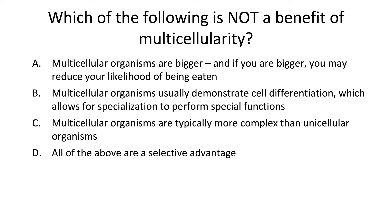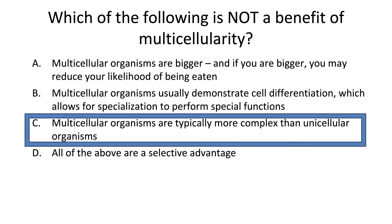Quick question: which of the following is not a benefit of multicellularity? If you said C — that multicellular organisms are typically more complex than unicellular organisms — that is a true statement, but it is not necessarily a benefit. Complexity in itself is not a benefit. There can be benefits associated with complexity, like greater specialization or being larger to access larger prey, but all things being equal, being more complex versus unicellular is not inherently advantageous over the other.